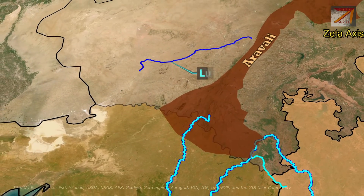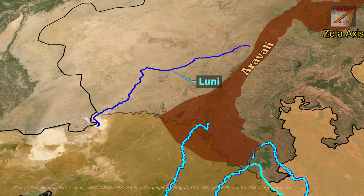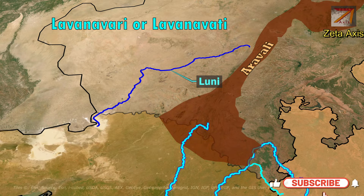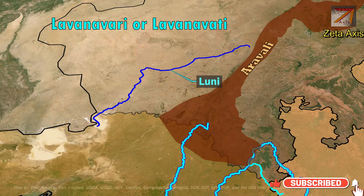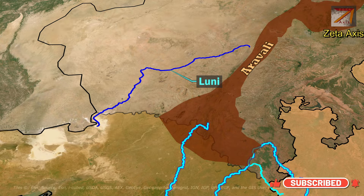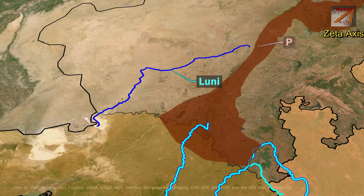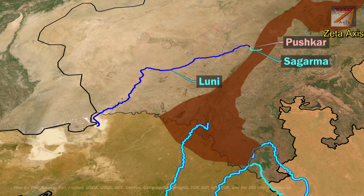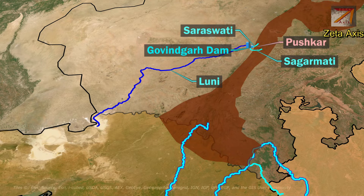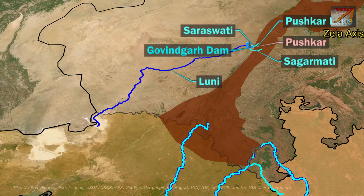The next important river of Gujarat is Luni River. Luni is also known as Lavanyavari or Lavanyavati, which means Salt River. Luni is the largest river in the Thar Desert of North-Western India. It originates in Pushkar Valley of the Aravalli range near Ajmer. It is first known as Sagarmati, and after passing through Govindgarh it meets its tributary Saraswati, which originates from Pushkar Lake. From here, the river is called Luni River.